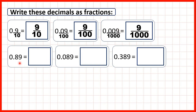Now we have 0.89. There are two digits after the decimal point, and the second digit after the decimal point is the hundredths digit. So we draw a line across from the decimal point and write a denominator of 100. That's 89 hundredths. Notice the answer is not 9 hundredths — that would be 0.09. We have 0.89, and eight tenths is equivalent to 80 hundredths, giving us 89 hundredths.